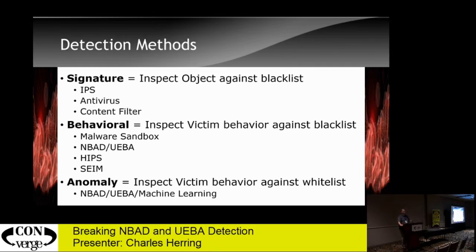Real quick on how we detect things in cybersecurity. Signature-based detection is when you inspect the object for a known pattern — there's an indicator of compromise referenced. In the food world, it would be like looking at your food and there's mold on it, so you know what to look for, you found it, there's a pattern match, and you trigger on it.